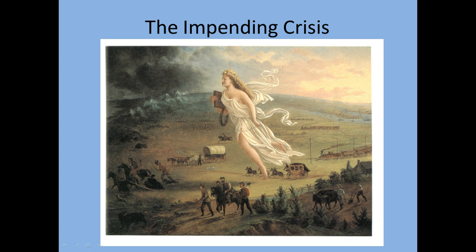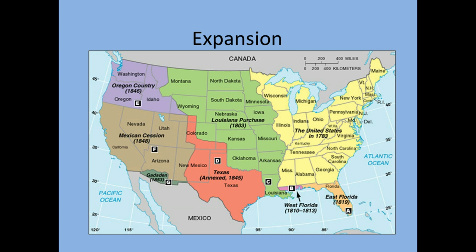We're going to talk a lot about this painting in class, so soak it in. This painting is called Destiny Leading the People, and we usually associate it with that idea of Manifest Destiny, which we'll talk about. In the 1840s, we're going to add a million square miles of land, and we are more or less going to end up with what is today the mainland contiguous United States — that means everything but Alaska and Hawaii.